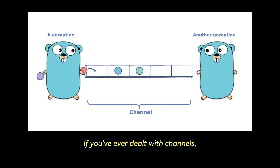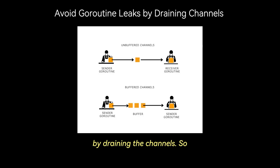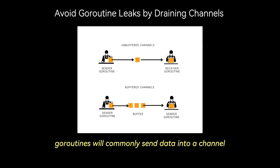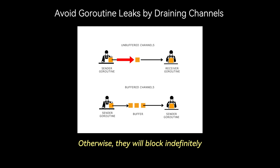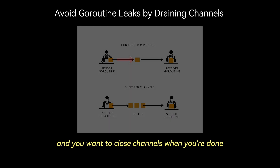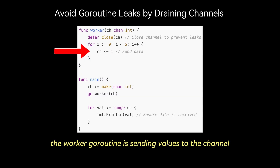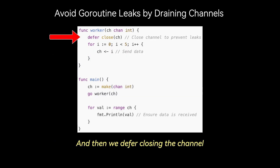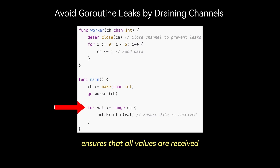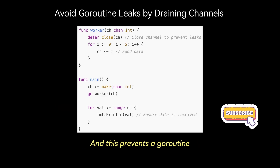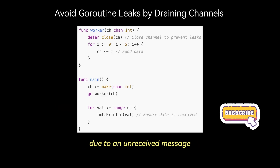This next one is important if you've dealt with channels: avoid goroutine leaks by draining channels. Goroutines commonly send data into a channel that must have a corresponding receiver, otherwise they block indefinitely. Always ensure data is received and close channels when done. In this pattern, the worker goroutine sends values to the channel, we defer closing it once all values are sent, and for-range over the channel ensures all values are received, preventing goroutines from hanging indefinitely.